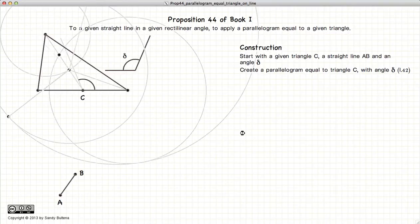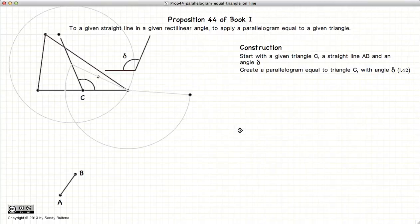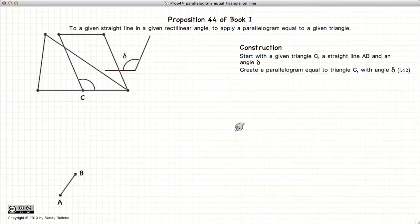Round and round she goes, lots of circles. Almost there. So now we have a parallelogram that is equal in area to our triangle.